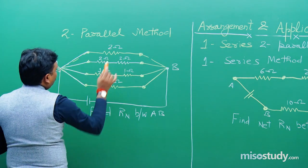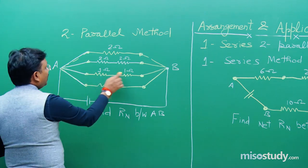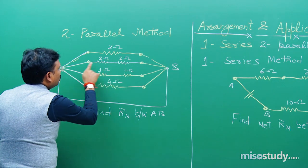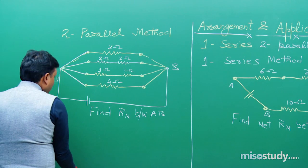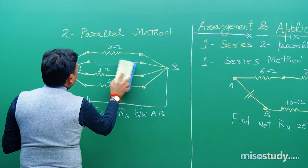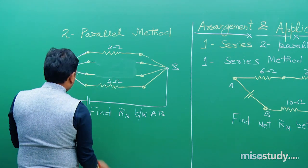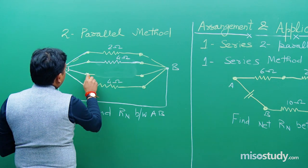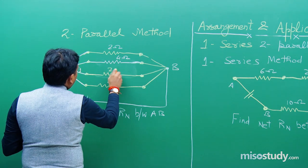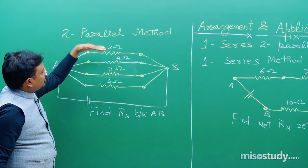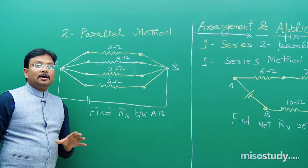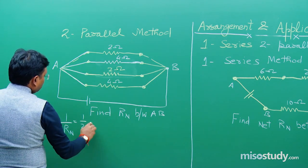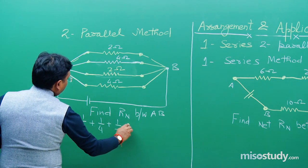This 2 ohm and 2 ohm in series give 4 ohm, and this 1 ohm and 1 ohm in series give 2 ohm. So rather than two separate 2-ohm resistors I write 4 ohm, and rather than two 1-ohm resistors I write 2 ohm. Now this 4 ohm, 2 ohm, and 4 ohm, and 2 ohm are all in parallel combination. Setting up the formula: 1/R_n = 1/2 + 1/4 + 1/2 + 1/4.